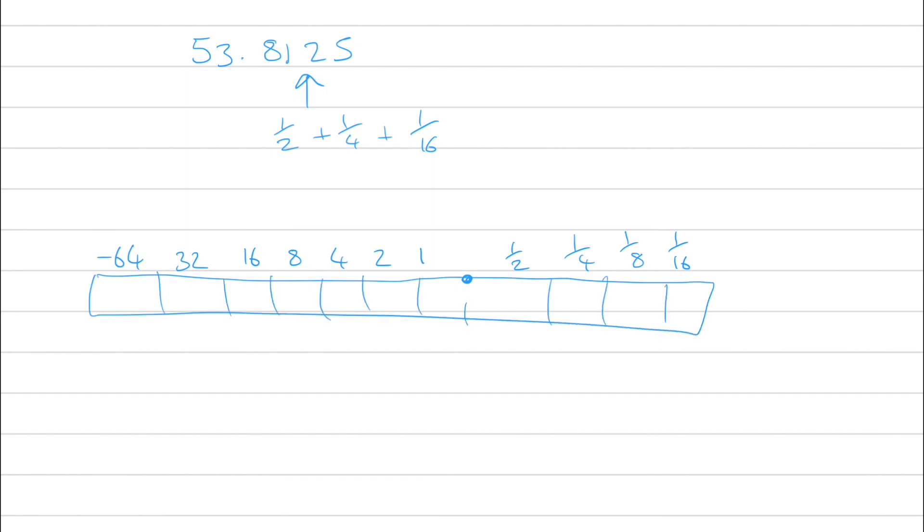And then we do that, we can turn on the half, the quarter, and the sixteenth, and then 53 is composed of 32, 16, 4, and 1. And of course, no minus 16s in there at all.